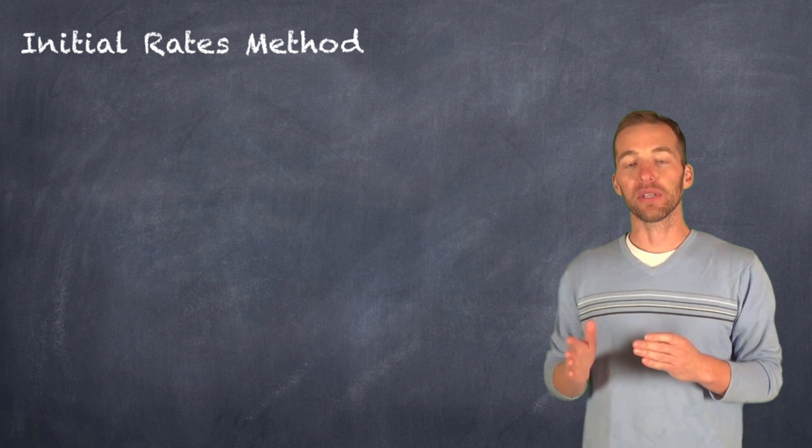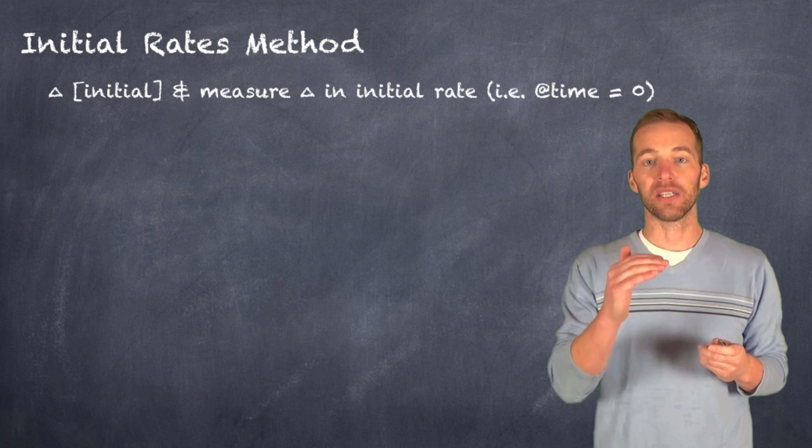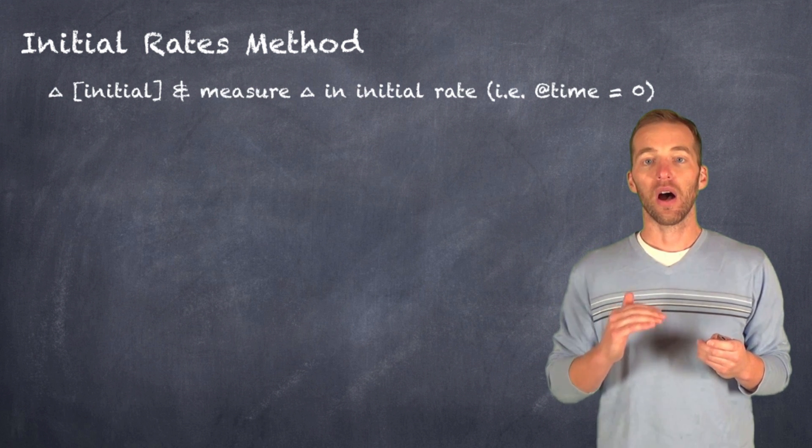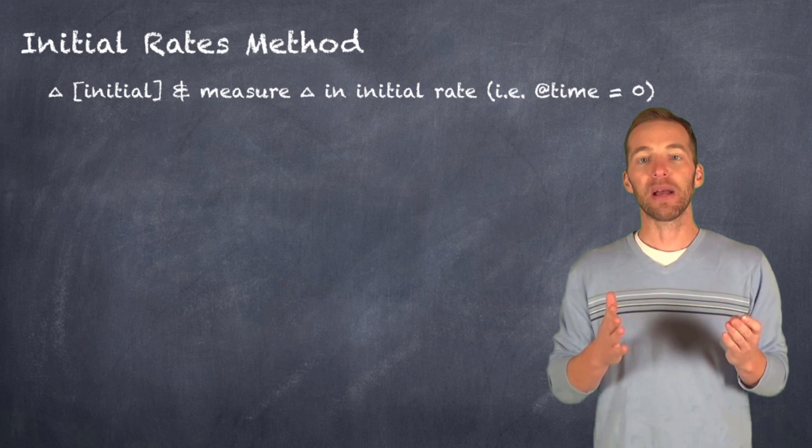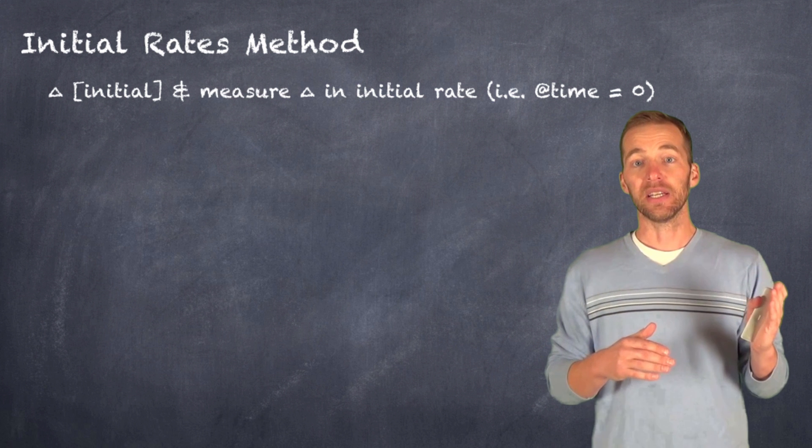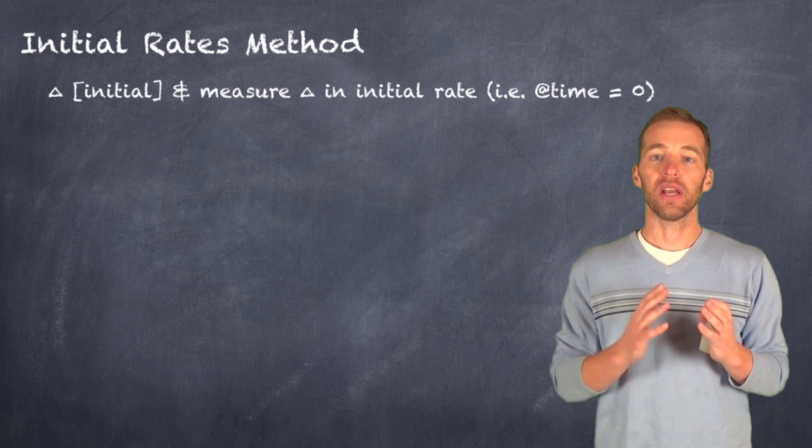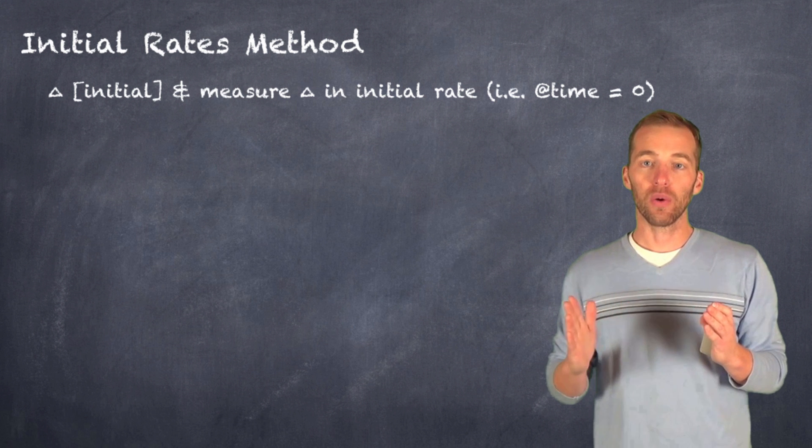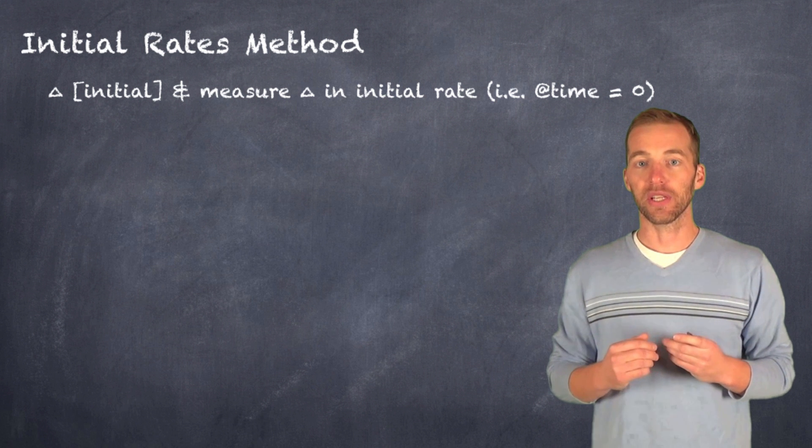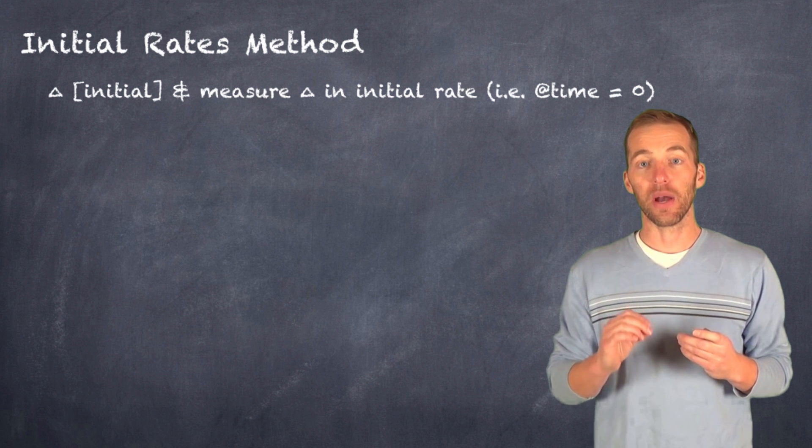Now the method that we use to do this is something called the initial rates method. And really what we're doing is just taking different concentrations of the reactants and measuring a short amount of time between the initial concentration and some end point. So we change the concentration and see how quickly or slowly the rate goes after changing that.